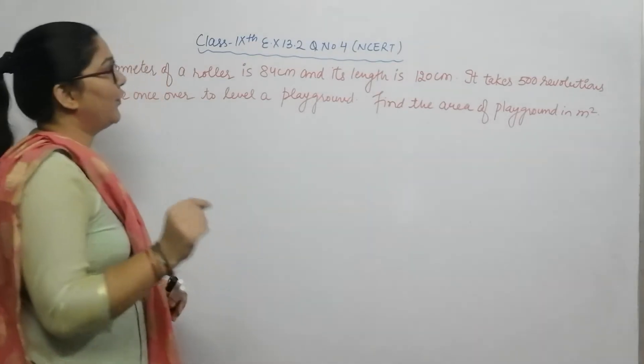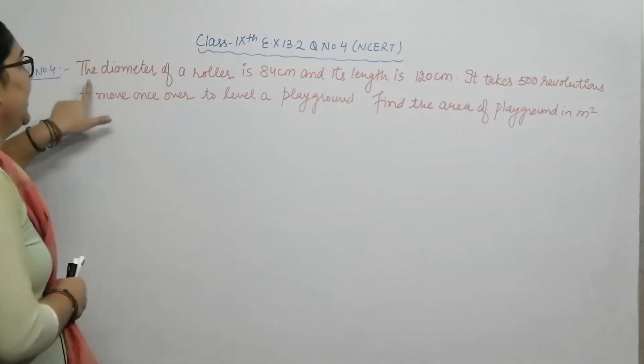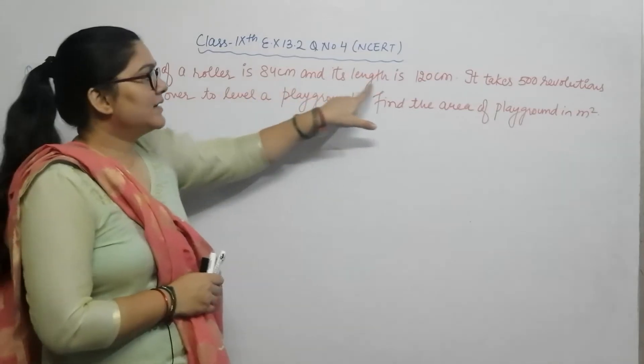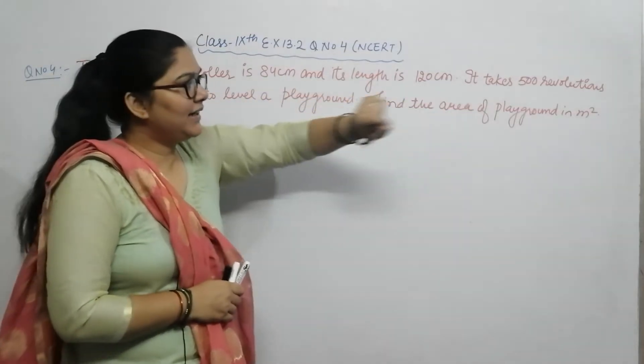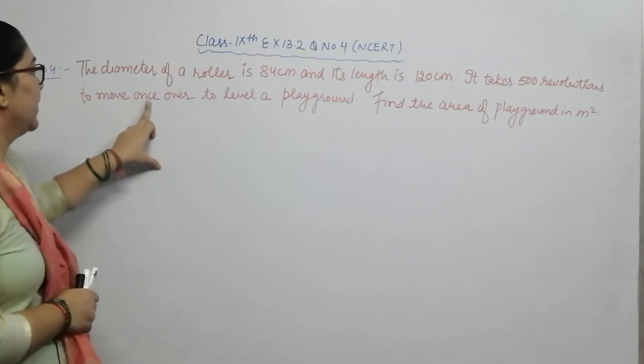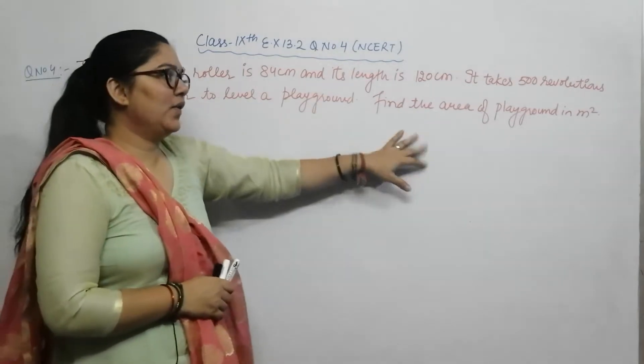The question states: The diameter of a roller is 84 centimeter and its length is 120 centimeter. It takes 500 revolutions to move once over a level playground. Find the area of playground in meter square.